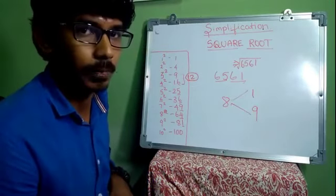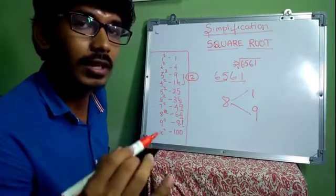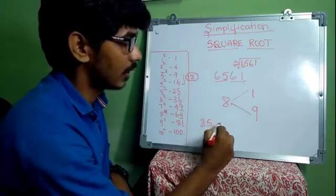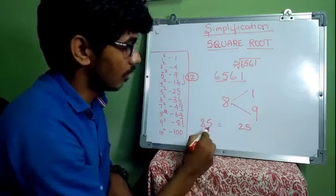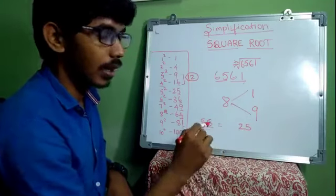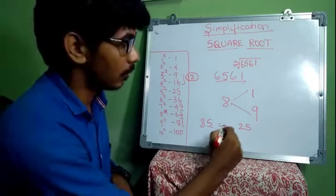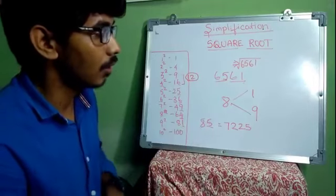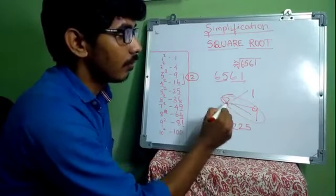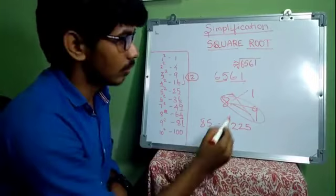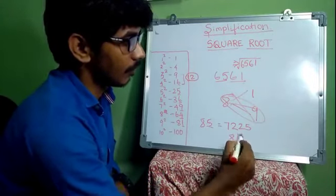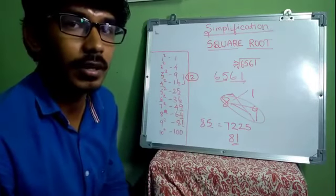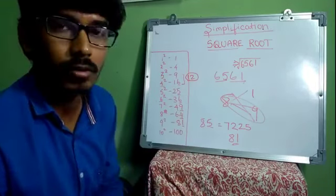We don't know whether the answer is 81 or 89. To find out, calculate 85²: 5² = 25, tens digit 8, next is 9, so 8 × 9 = 72 — giving 7225. Our number is 6561, which is lower than 7225. So 89 won't come — obviously the answer is 81. This is how you can easily find the square root.